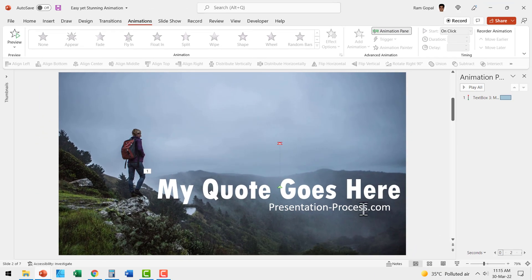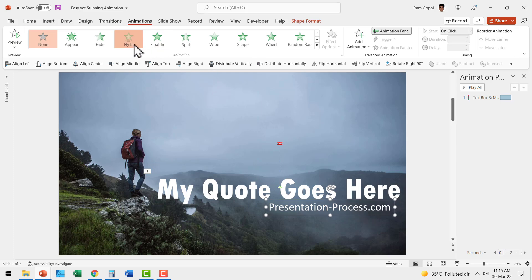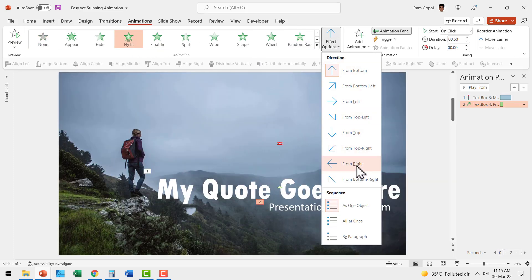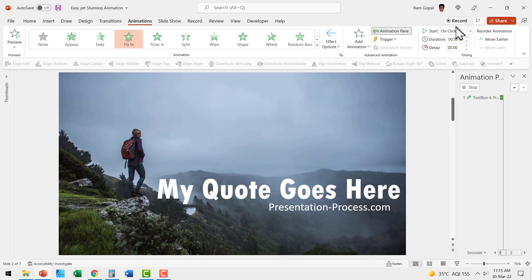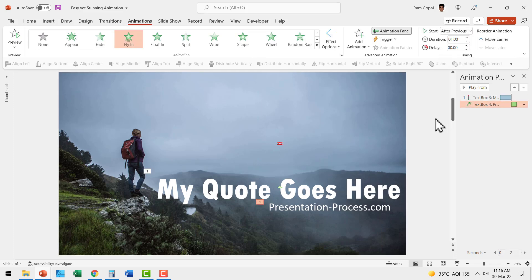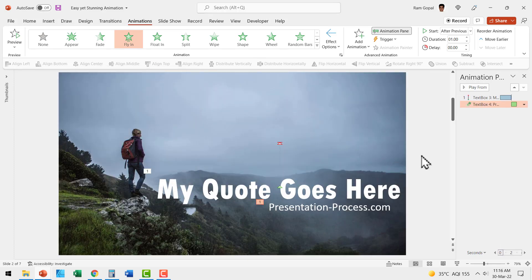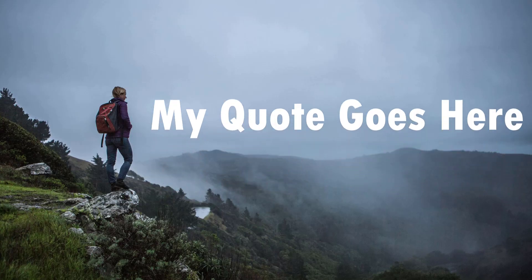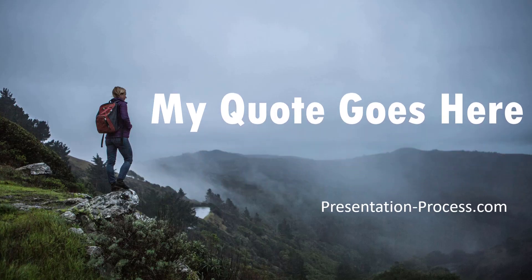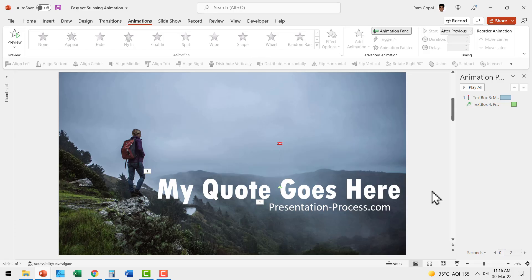We want this to fly in after the previous animation. So I select it, apply Fly In animation coming from the right, and set it to After Previous. Let's make it a bit slower — set it to one second — and add a bounce effect to this one as well to make it look consistent. Now when I go to Slide Show, this is what we have so far: first the quote, and then the person who made the quote.